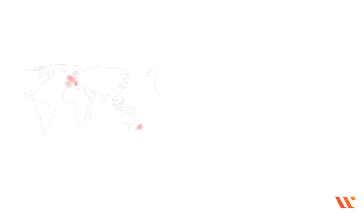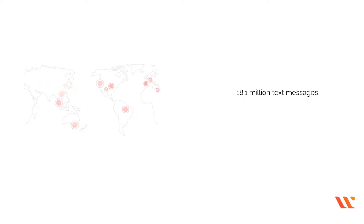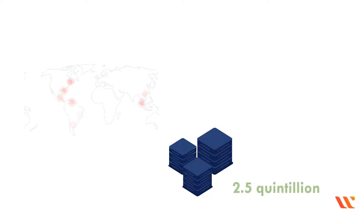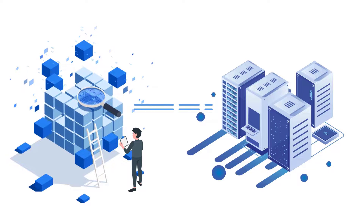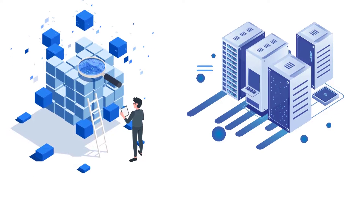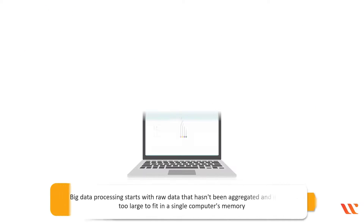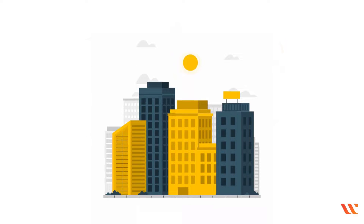Every minute, individuals around the world write 188 million emails, watch 4.5 million YouTube videos, and send 18.1 million text messages. In other words, every day we generate over 2.5 quintillion bytes of data. Big data refers to a huge volume of data collection that is more complex and derived from new data sources. Because these data are so large, they can't be completely processed using traditional methods. Big data processing starts with raw data that hasn't been aggregated and is often too large to fit in a single computer's memory, encompassing both unstructured and structured data.